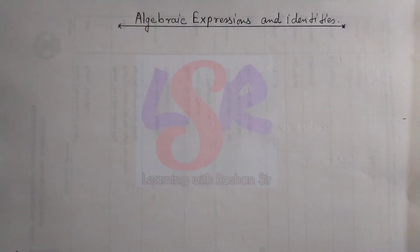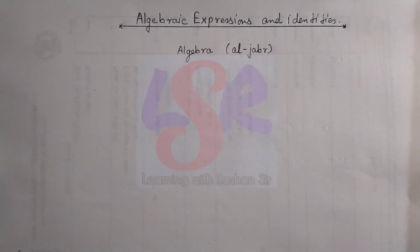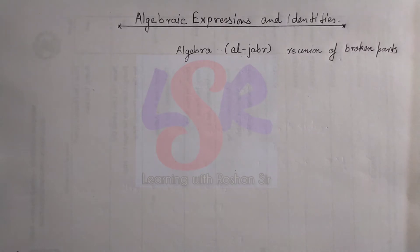Here we start with the chapter algebraic expressions and identities, that is the unit algebra. Now very first of all, what is algebra? Algebra is derived from the word al-jabr which means reunion of broken parts.